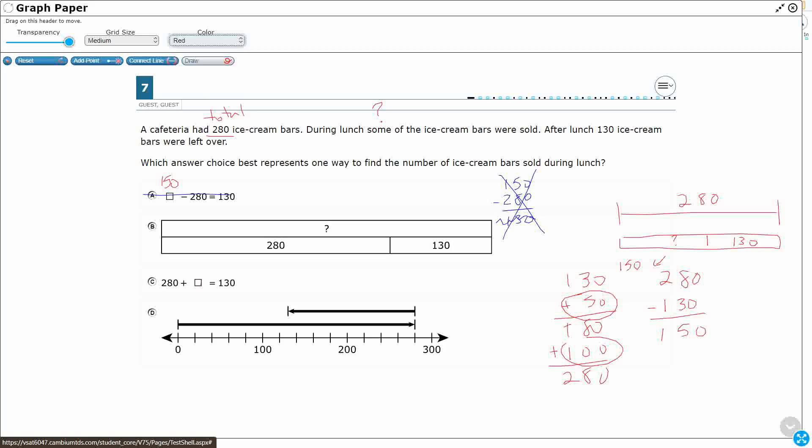Now, B does have a strip diagram, but remember, we sold 150 bars during lunch. The missing number is supposed to be 150, but take a look. I got my 280 and I've got my 130. It's a part, part, whole, but these are the two parts. In order to figure out what this is, I have to add those two. So that's 410. So it should be 410, not 150. We don't sell 410 during lunch, we sell 150. So that's where knowing the answer helps.